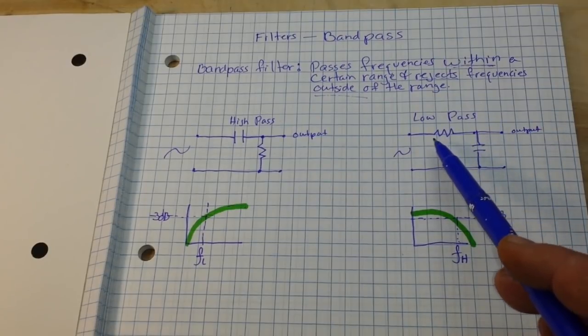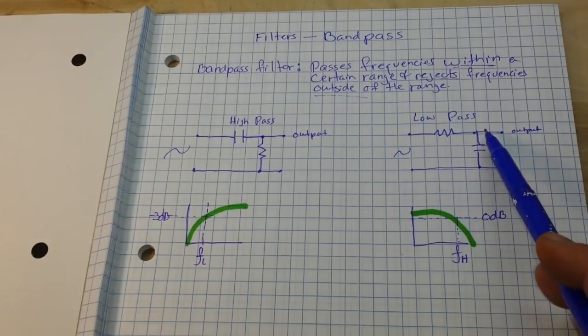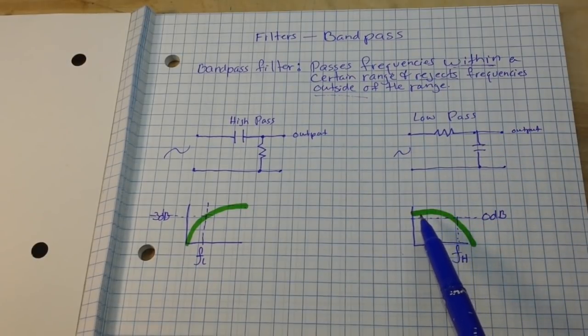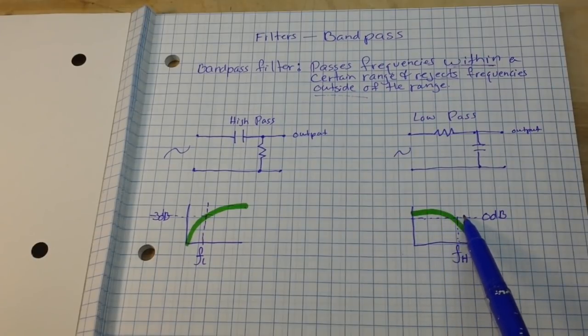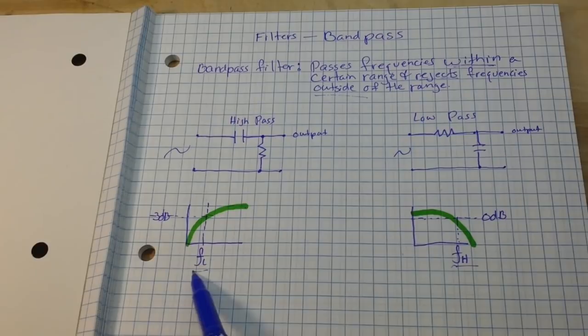Then our low pass filter, here we have our input with the resistor and then a parallel capacitor going to ground. It simply looks like the opposite. Anything above here is going to be attenuated, and everything down here is going to be passed. So that is our high frequency mark, and there is our low frequency mark.